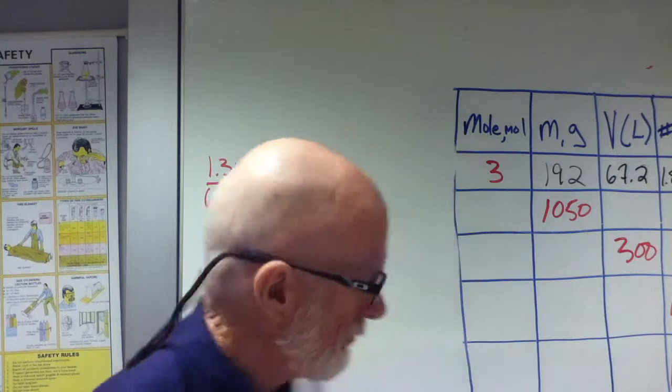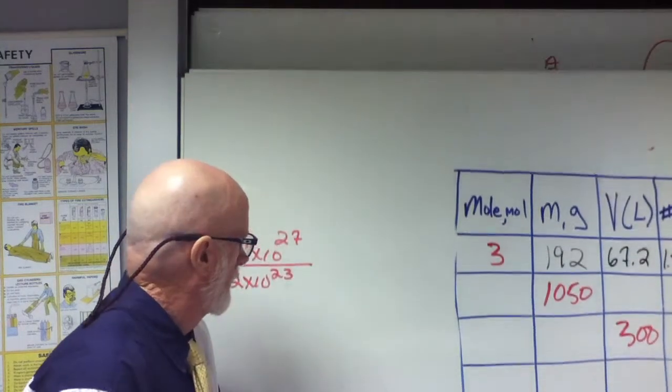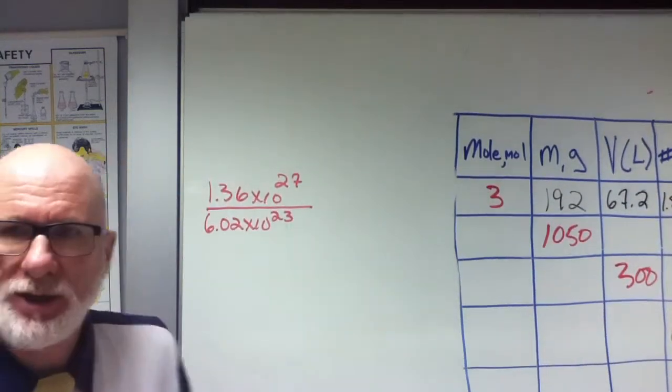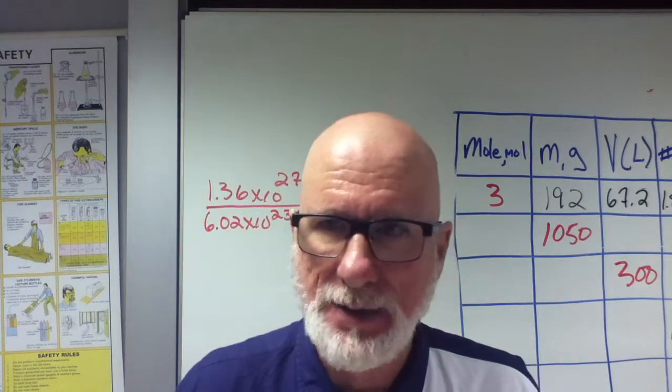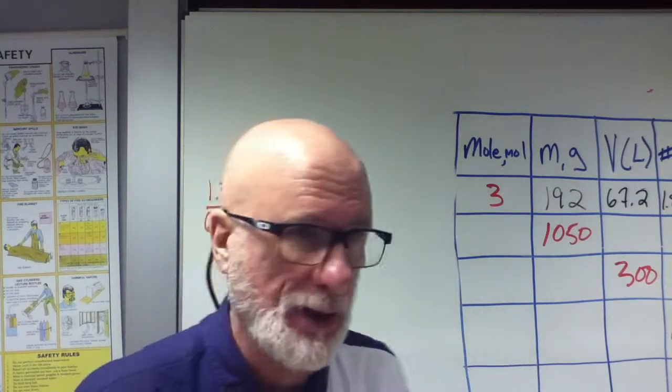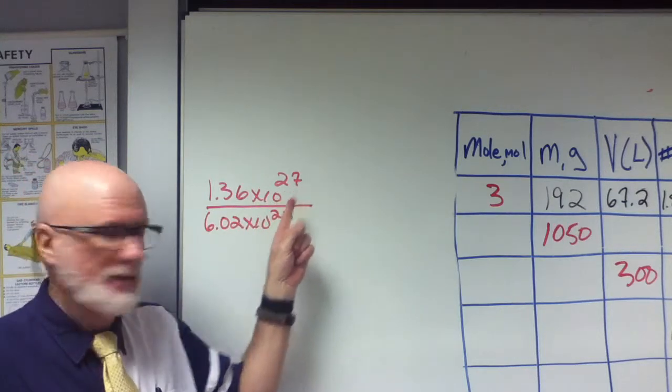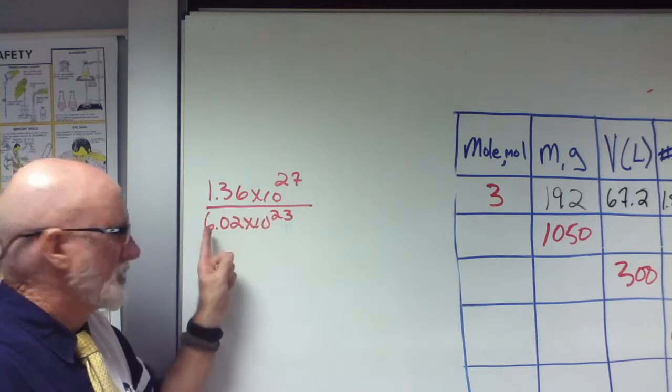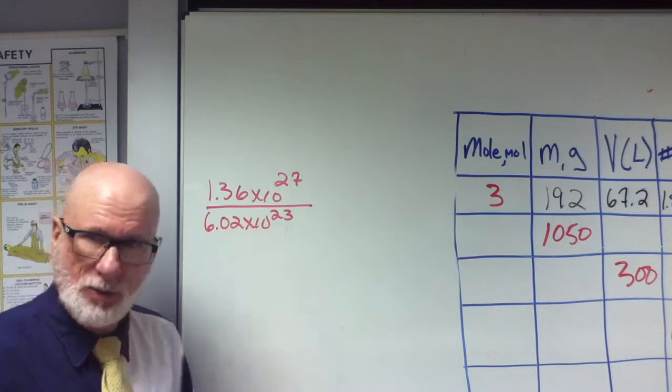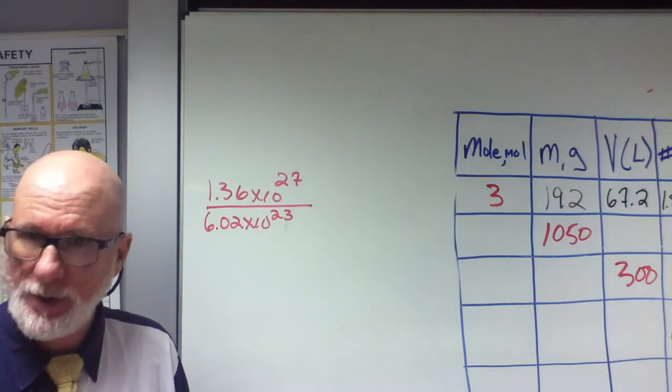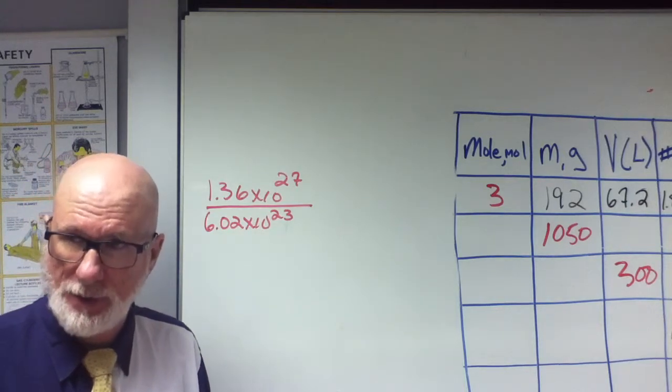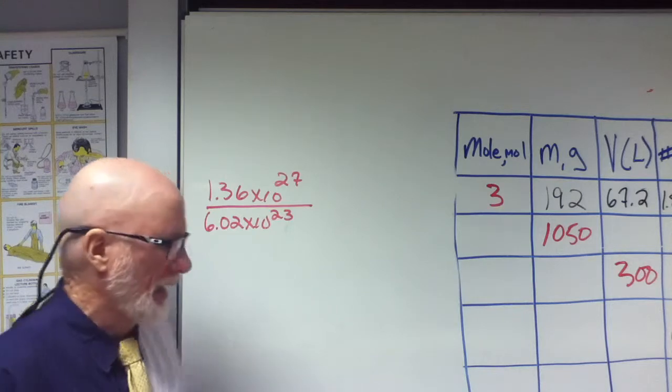Now, this is the problem. I'm not going to tell you how we even got it yet. This is the problem that you want to work out on your calculator: 1.36 times 10 to the 27th divided by 6.02 times 10 to the 23rd. Does everyone acknowledge that that's what we're doing?